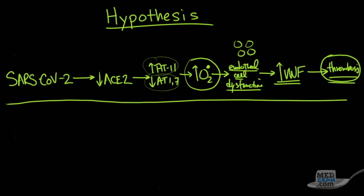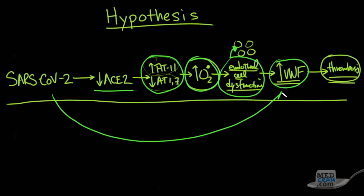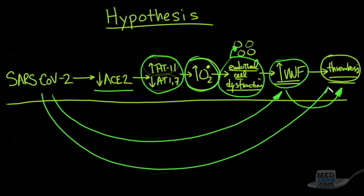Let's connect those dots. We know ACE2 is involved in the infection and causes this biochemical pattern. We know this pattern causes an increase in superoxide and oxidative stress, leading to endothelial cell dysfunction and release of Weibel-Palade body contents, increasing von Willebrand factor. We know from case reports that we see elevation in von Willebrand factor, and we know von Willebrand factor can cause increased thrombosis. We also have autopsy data showing that SARS-CoV-2 increases the amount of thrombosis. We don't know for a fact this is happening in every COVID-19 patient, but it seems very likely. Let's take a look at some more data.